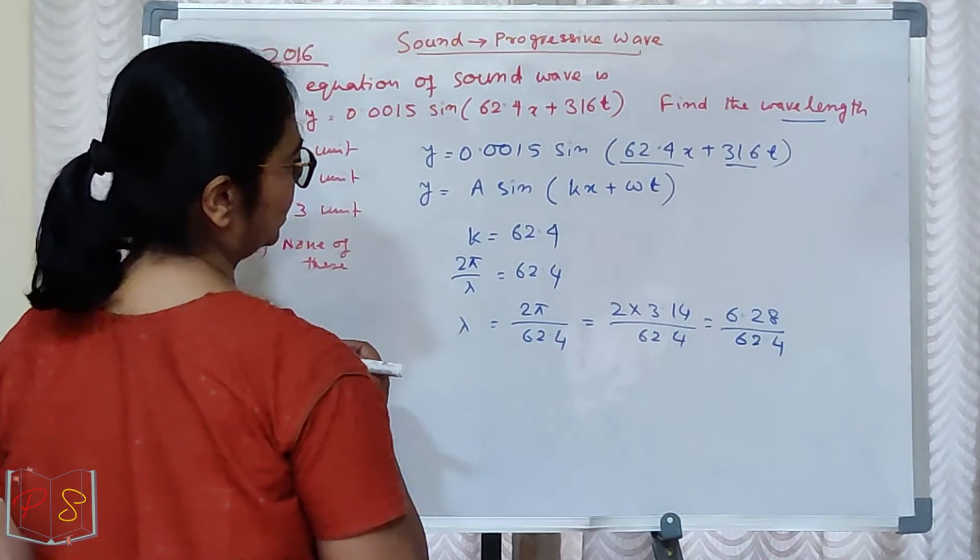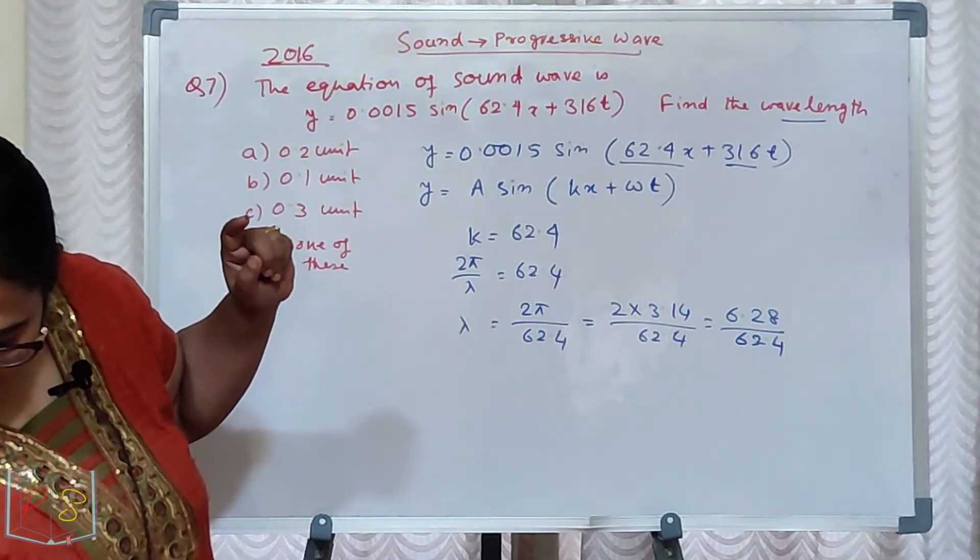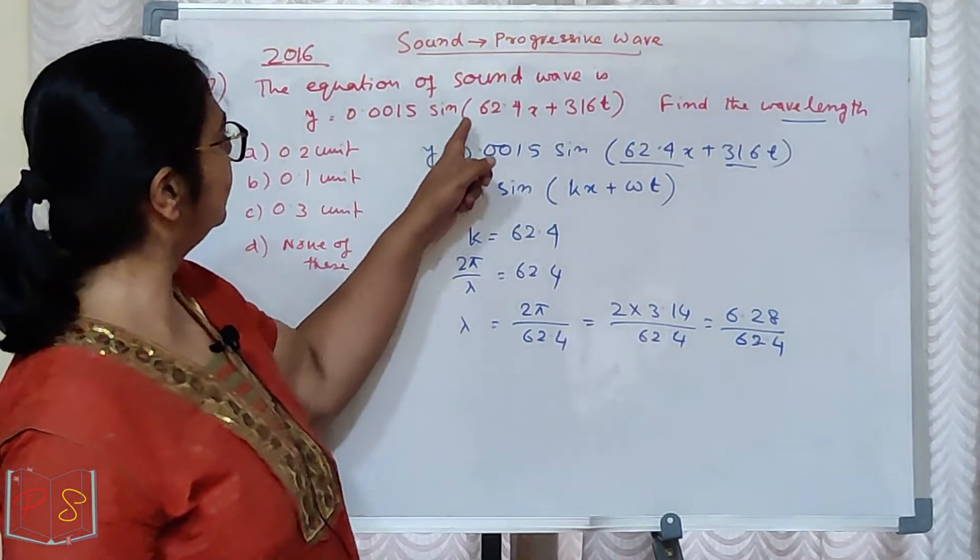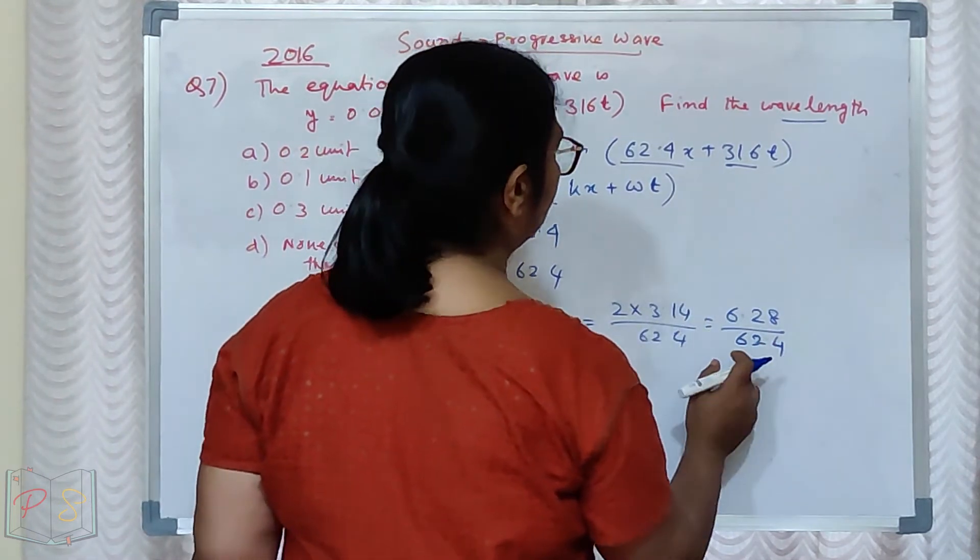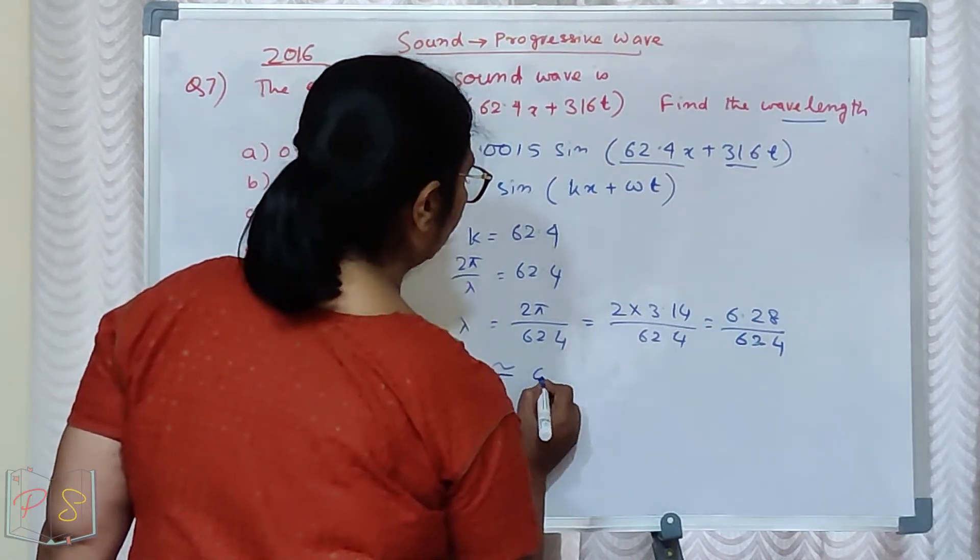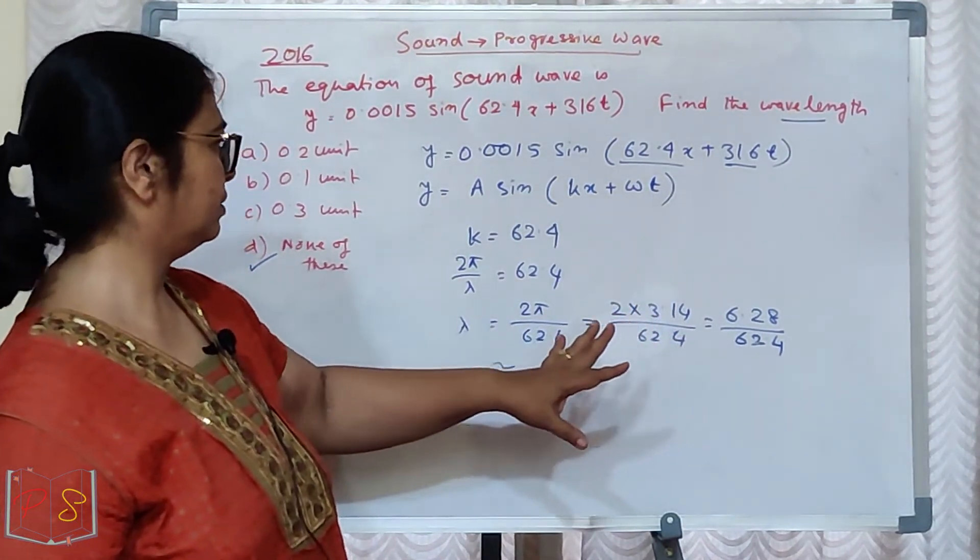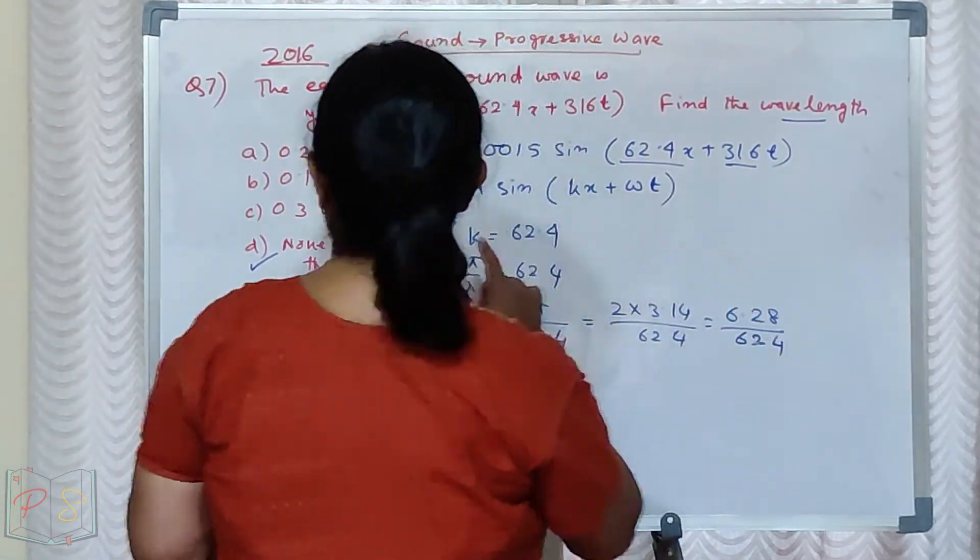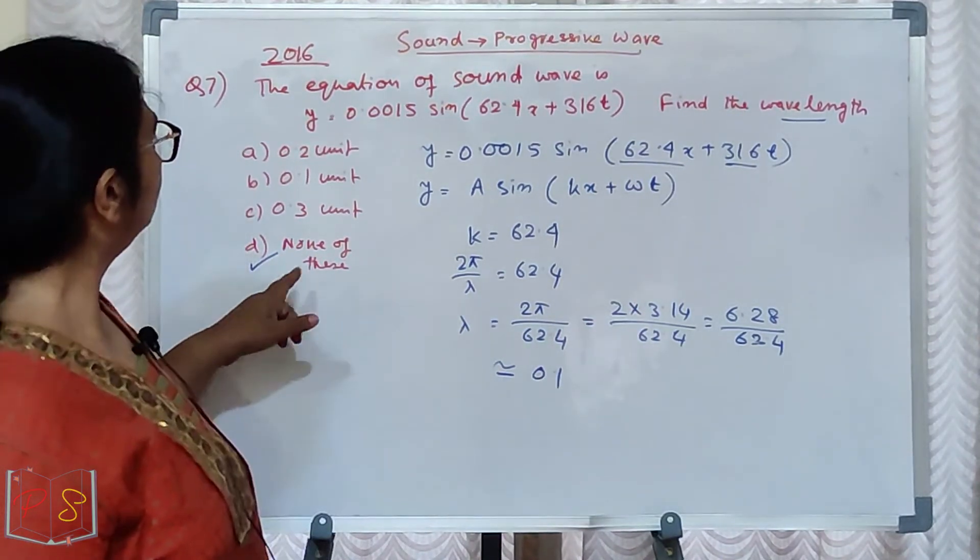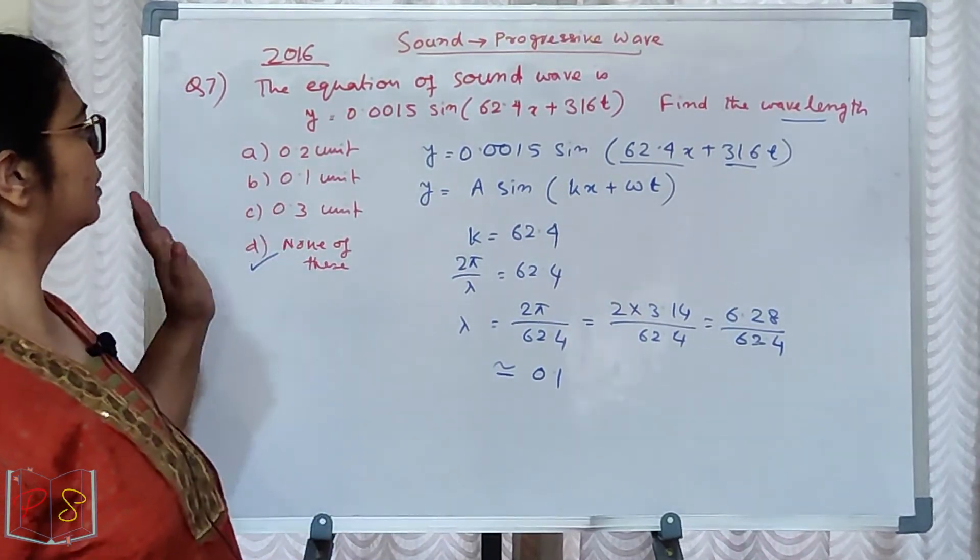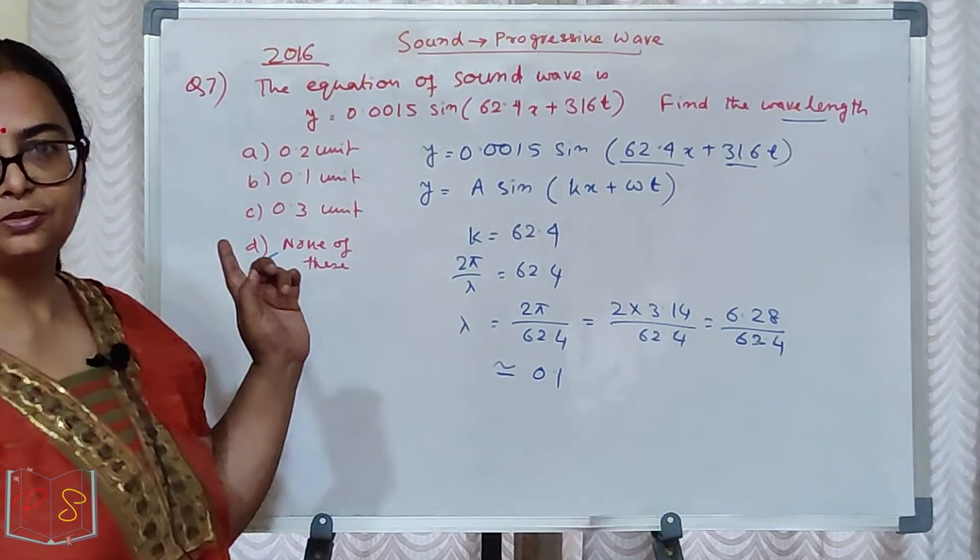With exact calculation using pi as 3.14, the result is close to but not exactly 0.1. So the answer is none of this. If you do the calculation with 2 times 3.14 divided by 62.4, it's not exactly 0.1, so none of this is correct.